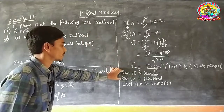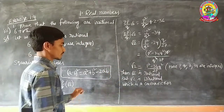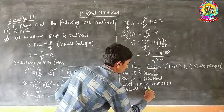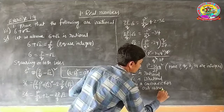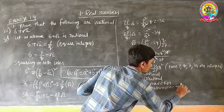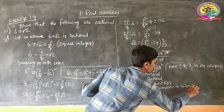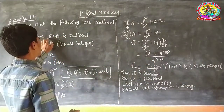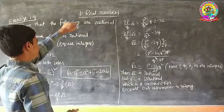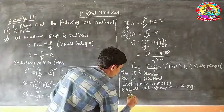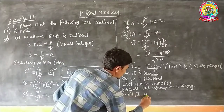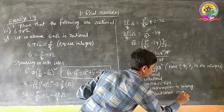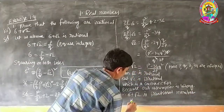Therefore, the given statement is correct: 6 plus root 2 is an irrational number. Hence it is the proof.